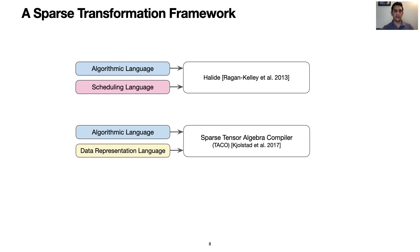On the other hand, TACO separated the algorithmic language from a data representation language, which describes the sparse formats of the inputs. This allows for the user to easily try new representations for their data without modifying the algorithm. This work demonstrates the importance of separating all three languages for the application of tensor algebra.